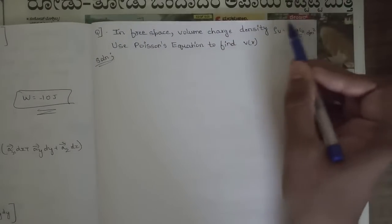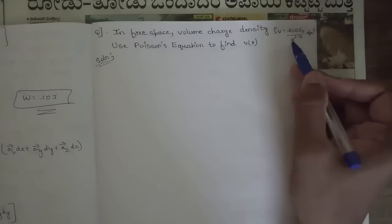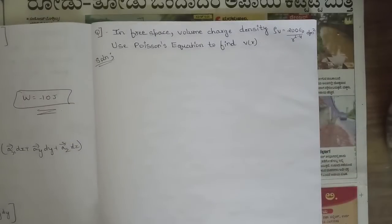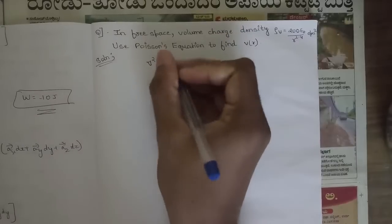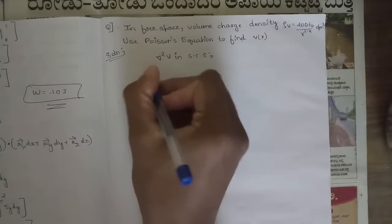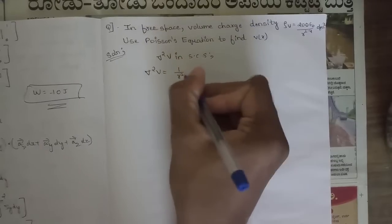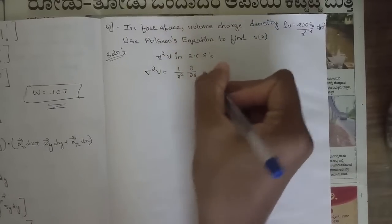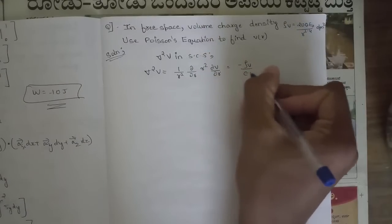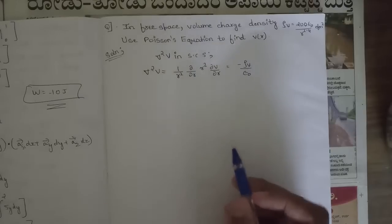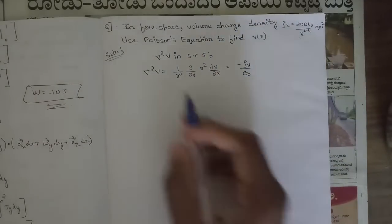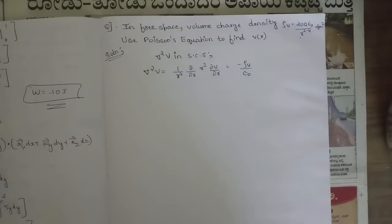In the expression for ρ_V, the denominator contains r to the power 2.4, so we can say it is in the spherical coordinate system. That's why we need to substitute the value of del²V in spherical coordinates. Since the question mentions only the r component, only the r component is needed. The formula is: (1/r²)(∂/∂r)(r² ∂V/∂r) = −ρ_V/ε₀.